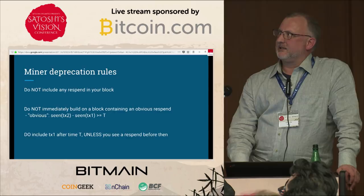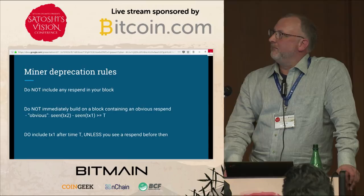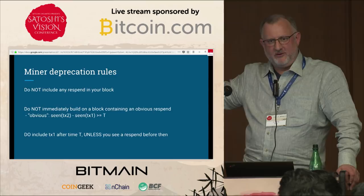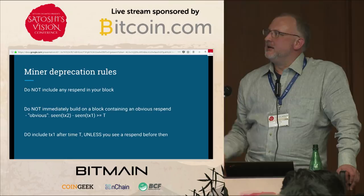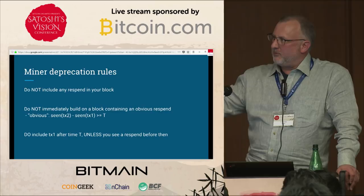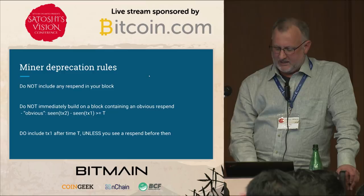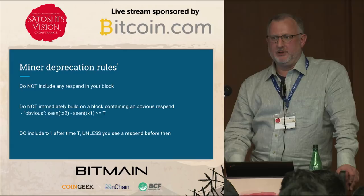The basic idea with miner deprecation is that miners don't include any re-spend in their block even if it arrived slightly later, but they would include a transaction if the double spend came a long time after the original. That's important because you can't have a situation where introducing a double spend prevents the original from being mined — that would let an attacker get goods for free. What miners would do is not immediately build on a block from another miner that contained an obvious double spend, incentivizing each other to follow a common set of rules without needing a fork.